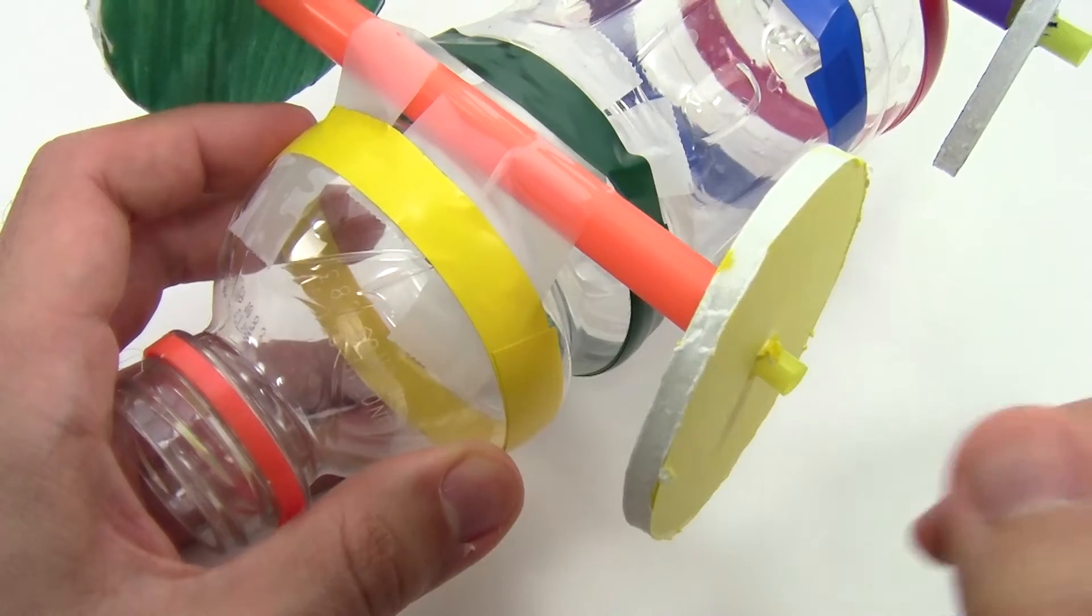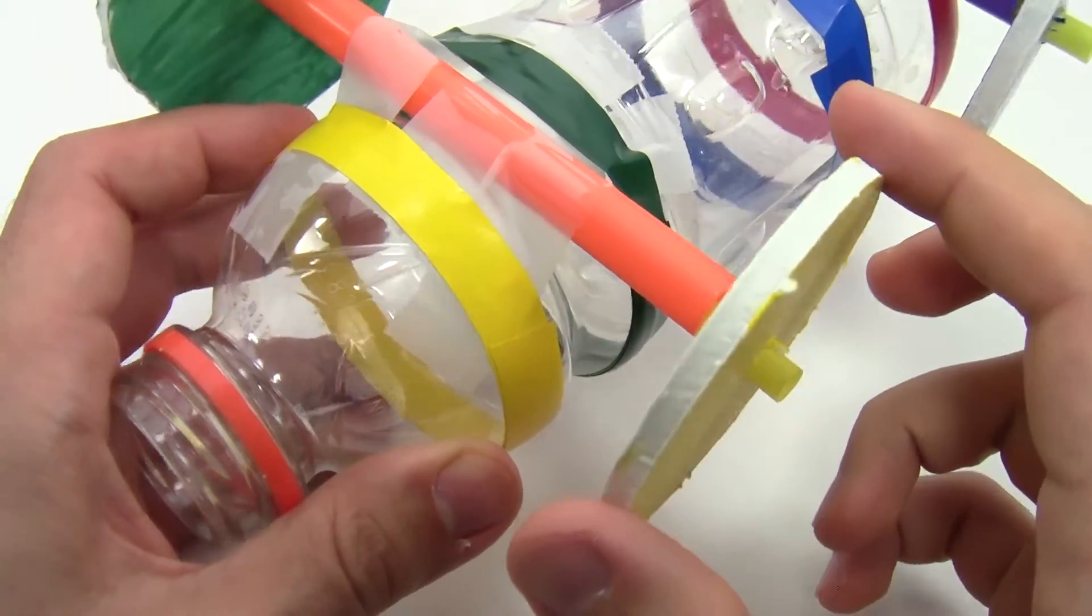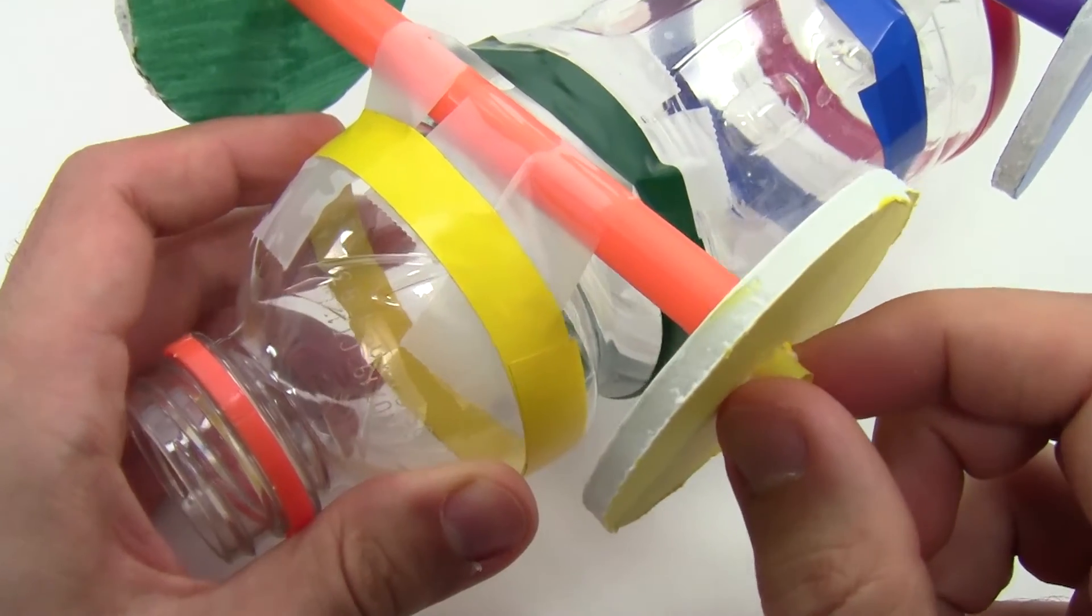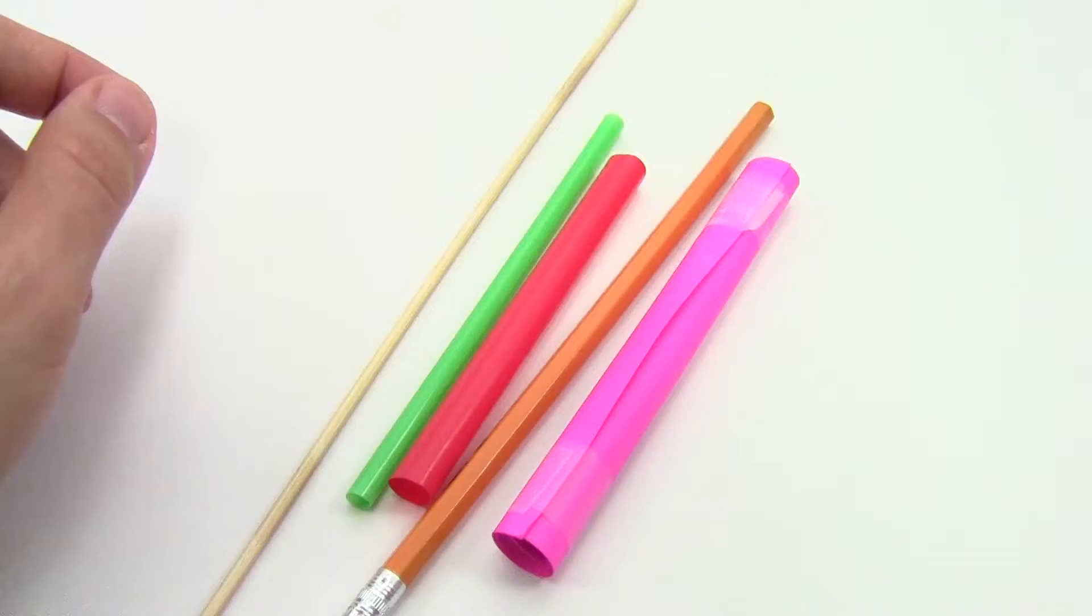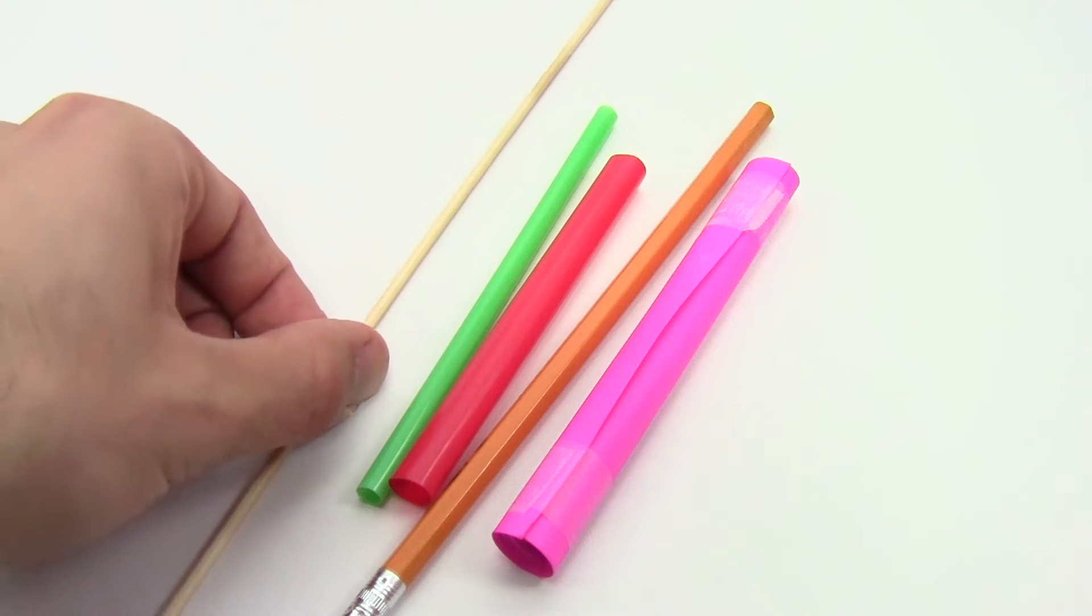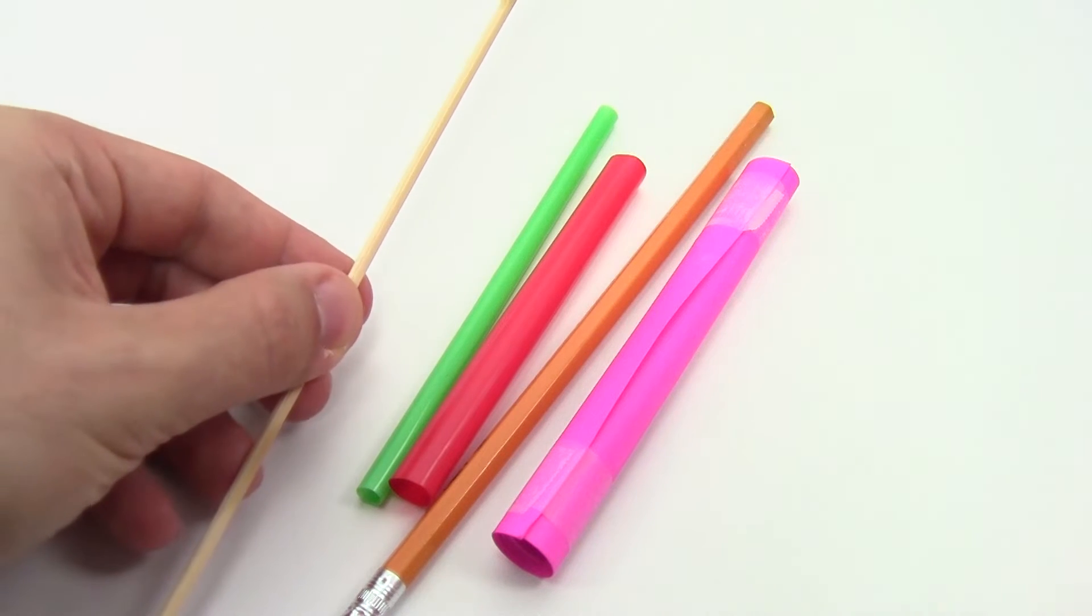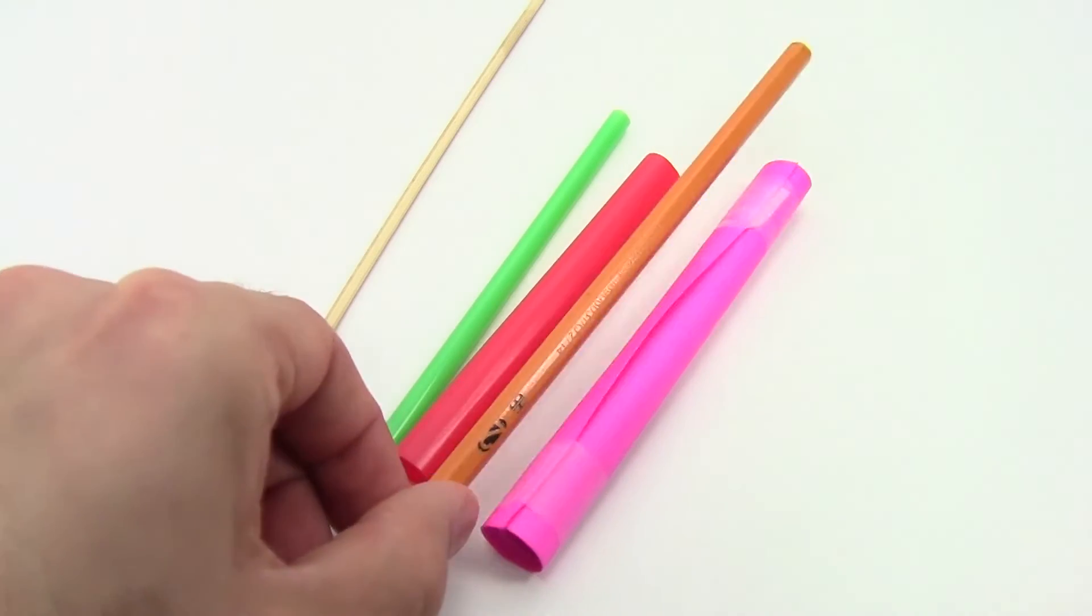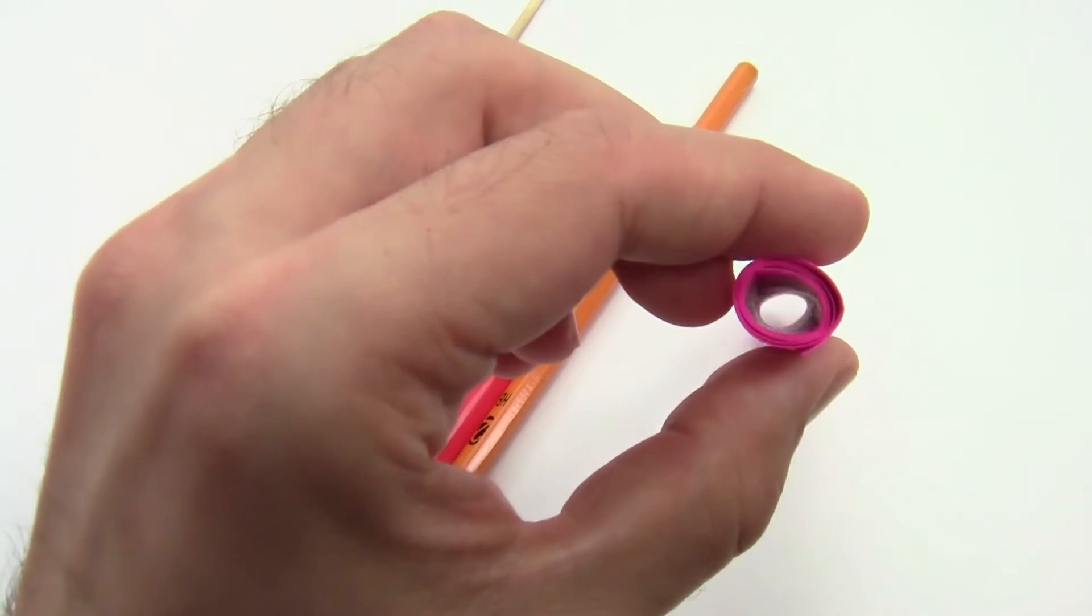The axles may be the trickiest part of your car to build. They're what connect the wheels to the chassis and allow them to spin. Without axles, your wheels won't spin, and your car won't move. To build axles, you'll generally need long, skinny, and cylindrical materials. For example, wooden skewers, plastic straws, pencils, or paper rolled into a tube.